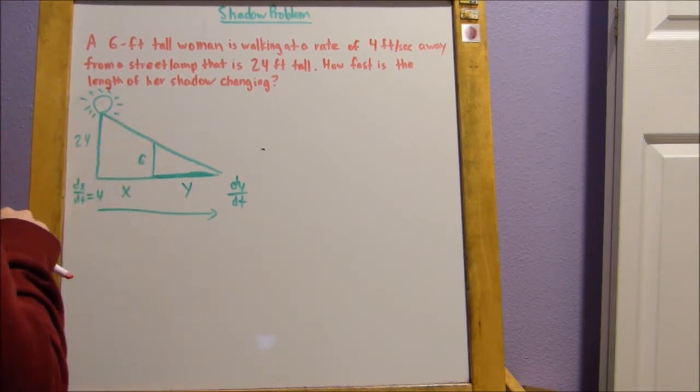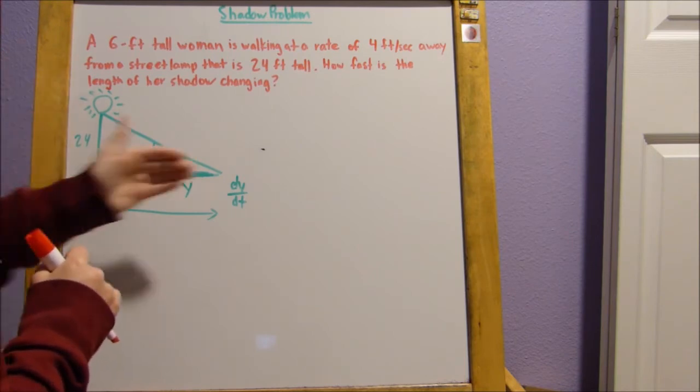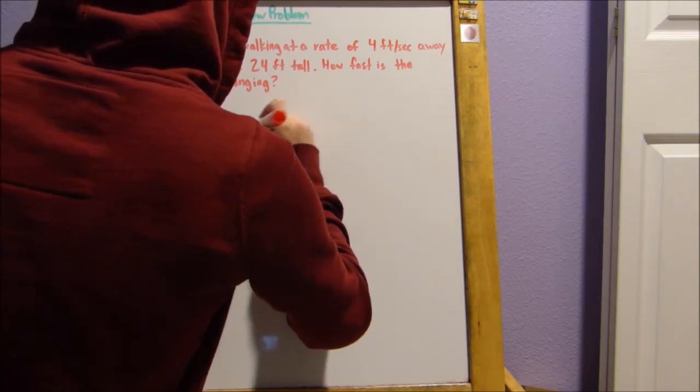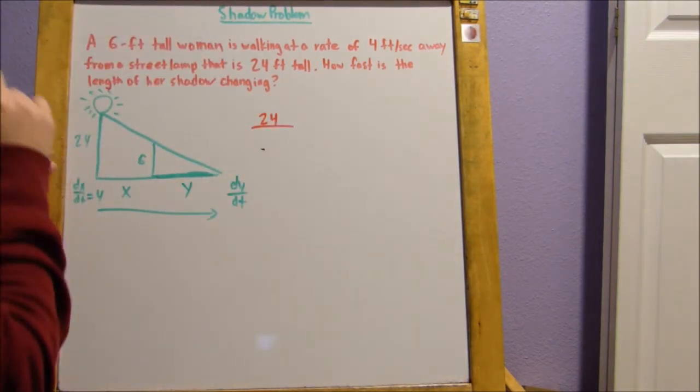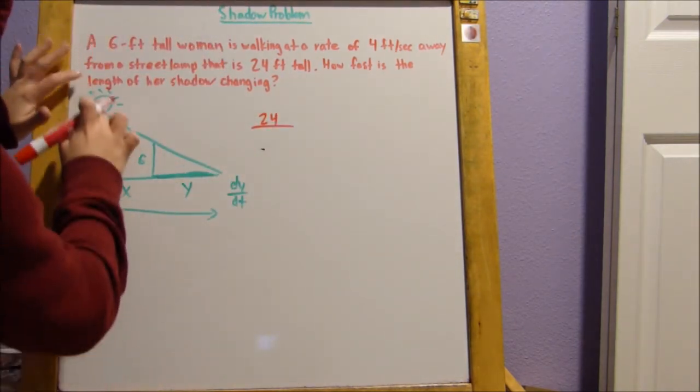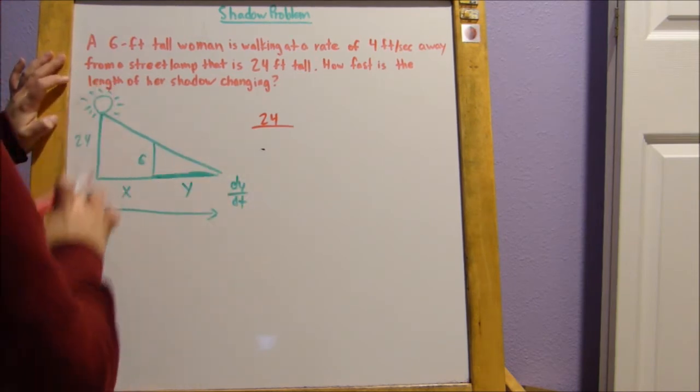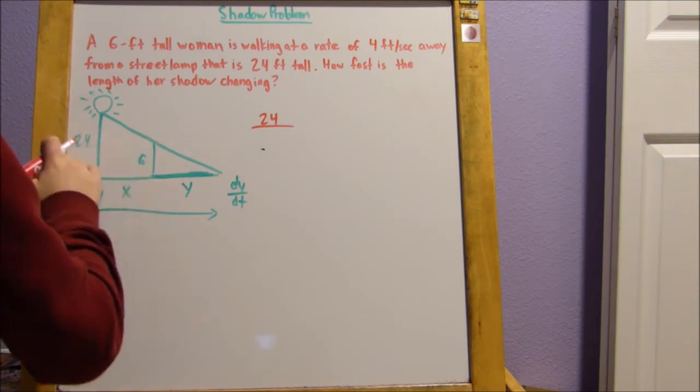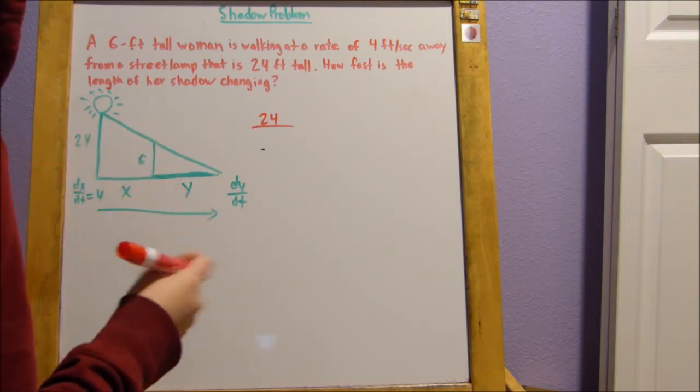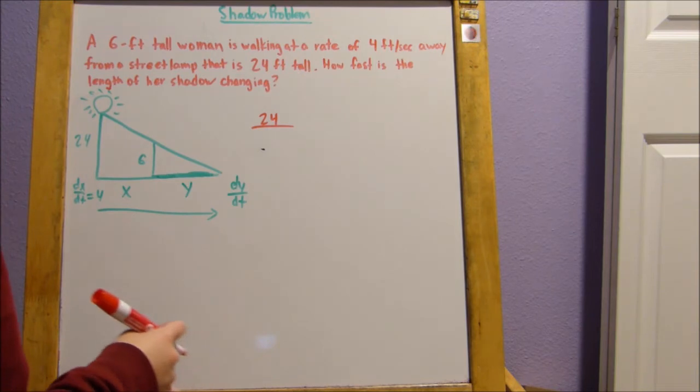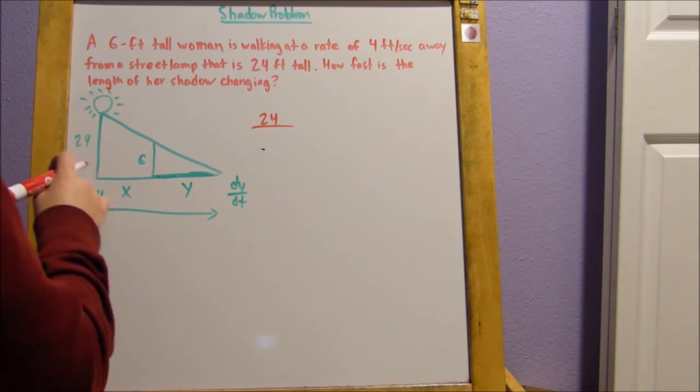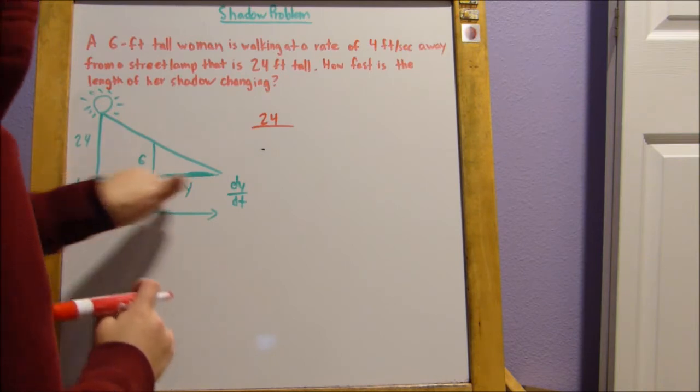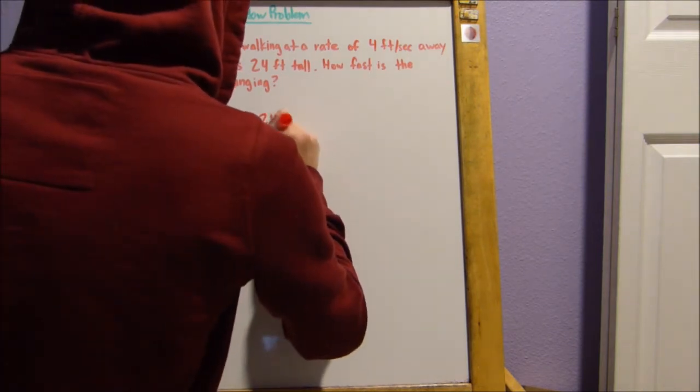What we're going to do is we're going to use the idea of a similar triangle to set up this fancy-dancy little thing. So if this is our big triangle, and this is our small triangle, our side lengths should be able to be set equal to each other, I suppose, if that's the way you want to say it. So if this is our big triangle, 24 over x plus y, right?